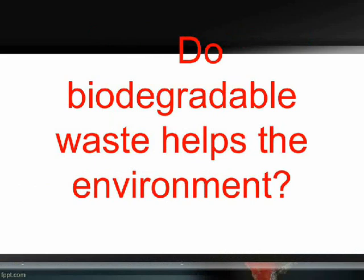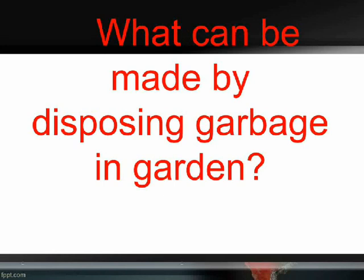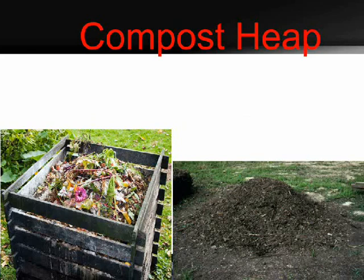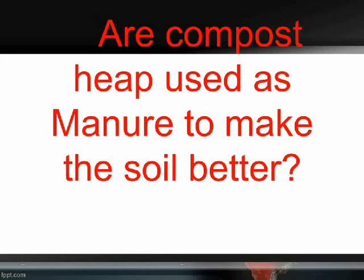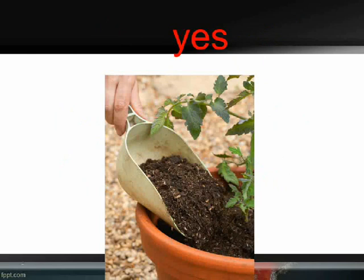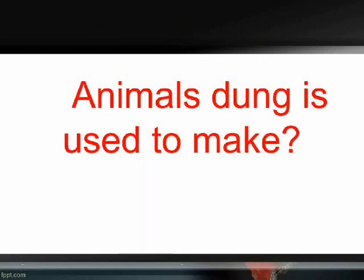Do biodegradable waste help the environment? Yes. What can be made by disposing garbage in a garden? A compost heap. Are compost heaps used as manure to make the soil better? Yes. Animal dung is used to make gobar gas.